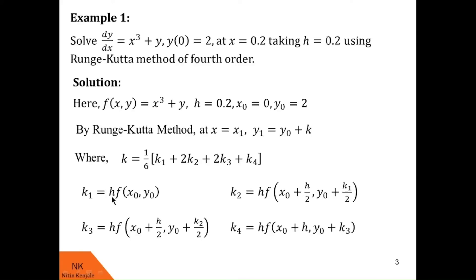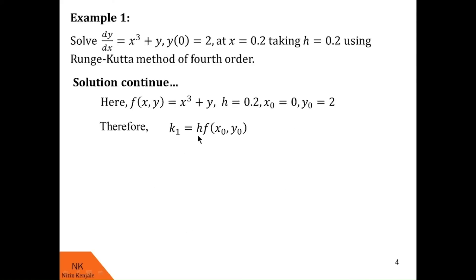Let us calculate k₁, k₂, k₃, k₄ first, then substitute them into the formula of k, and then substitute k back to find y₁. k₁ = h·f(x₀, y₀) = 0.2·f(0, 2), since x₀ = 0 and y₀ = 2. Using the definition f(x,y) = x³ + y, we put x = 0 and y = 2. So k₁ = 0.4.